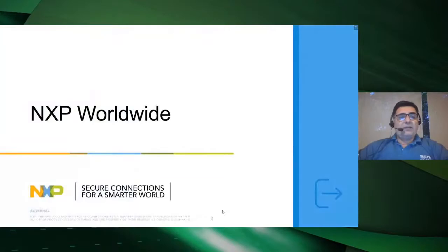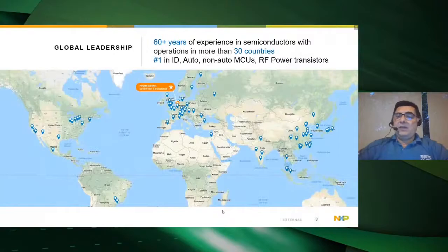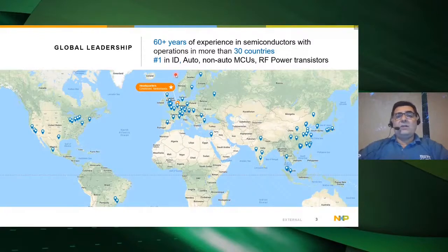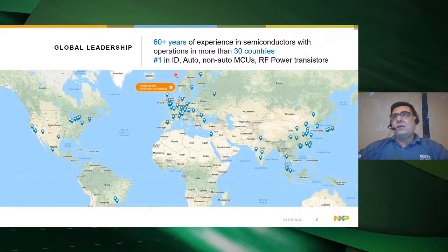NXP is a global leader in the semiconductor industry with 60-plus years of experience and operations in more than 30 countries. Our headquarters are in the Netherlands. NXP is currently number one in identification — e-passports, transportation, and credit cards — as well as in automotive electronics and in non-automotive MCUs and RF power transistors. It is very likely that a good part of the calls you make with your cell phones go through our chips in some way.